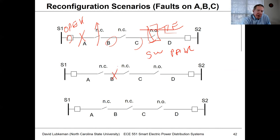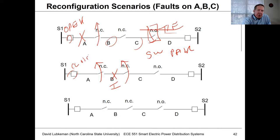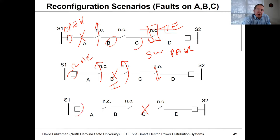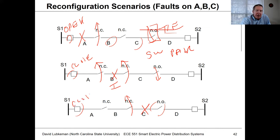If the fault is at B, the breaker locks open. I open the switch on each side — operating a switch pair — isolating that section. Then I can close the circuit breaker and also close the tie switch, which restores A and C even though B has to wait for the mean time to repair. Finally, if the fault is at C, I open the switch upstream of C, then close the breaker back in after it locked open, and A and B would have service while C has to wait.